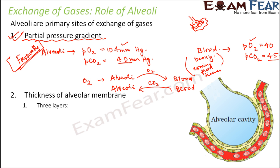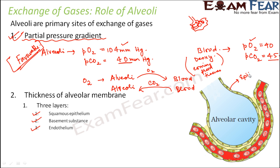The alveolar membrane is made up of three layers: a simple squamous epithelium layer, basement substance, and endothelium. The squamous epithelial layer is a single layer of cells — since it is just one single layer of squamous epithelium, it is quite thin. After that you have the basement substance, shown as a yellow-colored region. Then you have another layer of cells known as the endothelium of the capillaries.